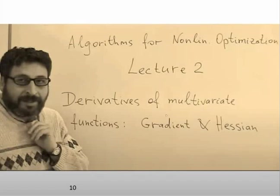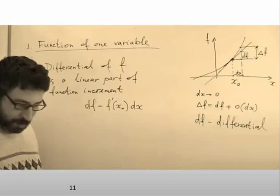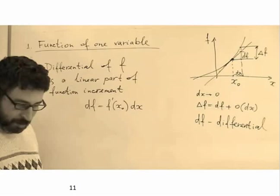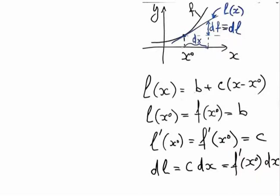Derivatives of multivariate functions, gradient conditions. We start with a one-dimensional example to settle the notion of differential, which is a little bit special in our course. If I have a non-linear function and I am staying at the point x₀, I can derive the best linear approximation — a linear function which passes through the same point and has the same slope as my original function. The differential is defined as the increment of this linear function when I give some increment dx to my argument.